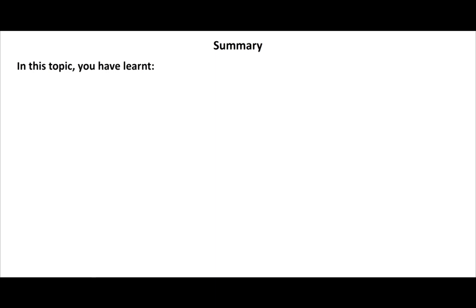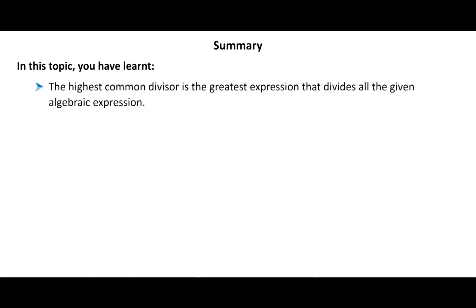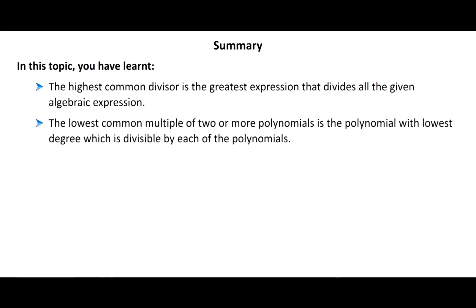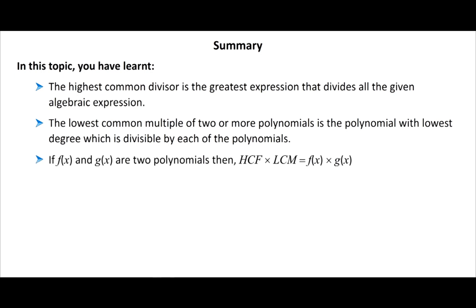In this topic you have learnt: the highest common divisor is the greatest expression that divides all the given algebraic expressions; the lowest common multiple of two or more polynomials is the polynomial with the lowest degree which is divisible by each of the polynomials; and the product of HCF and LCM of two polynomials F(x) and G(x) is equal to the product of the two polynomials.